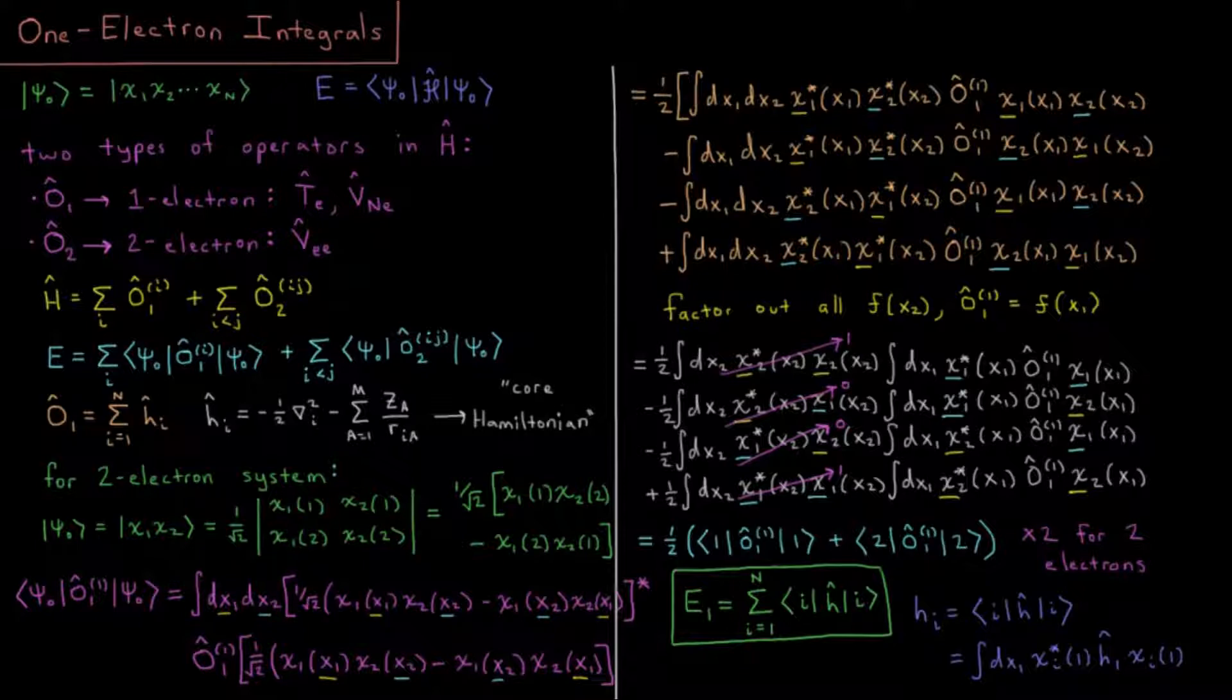I wanted to give an idea of where these one-electron integrals that we're going to be using frequently in Hartree-Fock theory come from in a derivation before we never care at this level of detail again and can just accept moving forward.